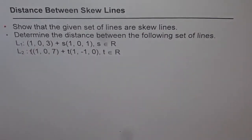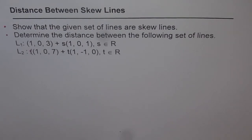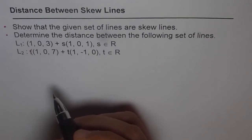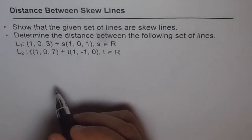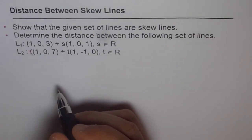First, we have to show that the lines are skew lines, then find the distance between the two lines. Skew lines means the lines are not parallel, but they are in parallel planes. Since the lines are in parallel planes, they don't intersect. So when finding the distance between skew lines, we are essentially finding the distance between two planes. For skew lines, you should remember that the scalar triple product is not equal to zero.